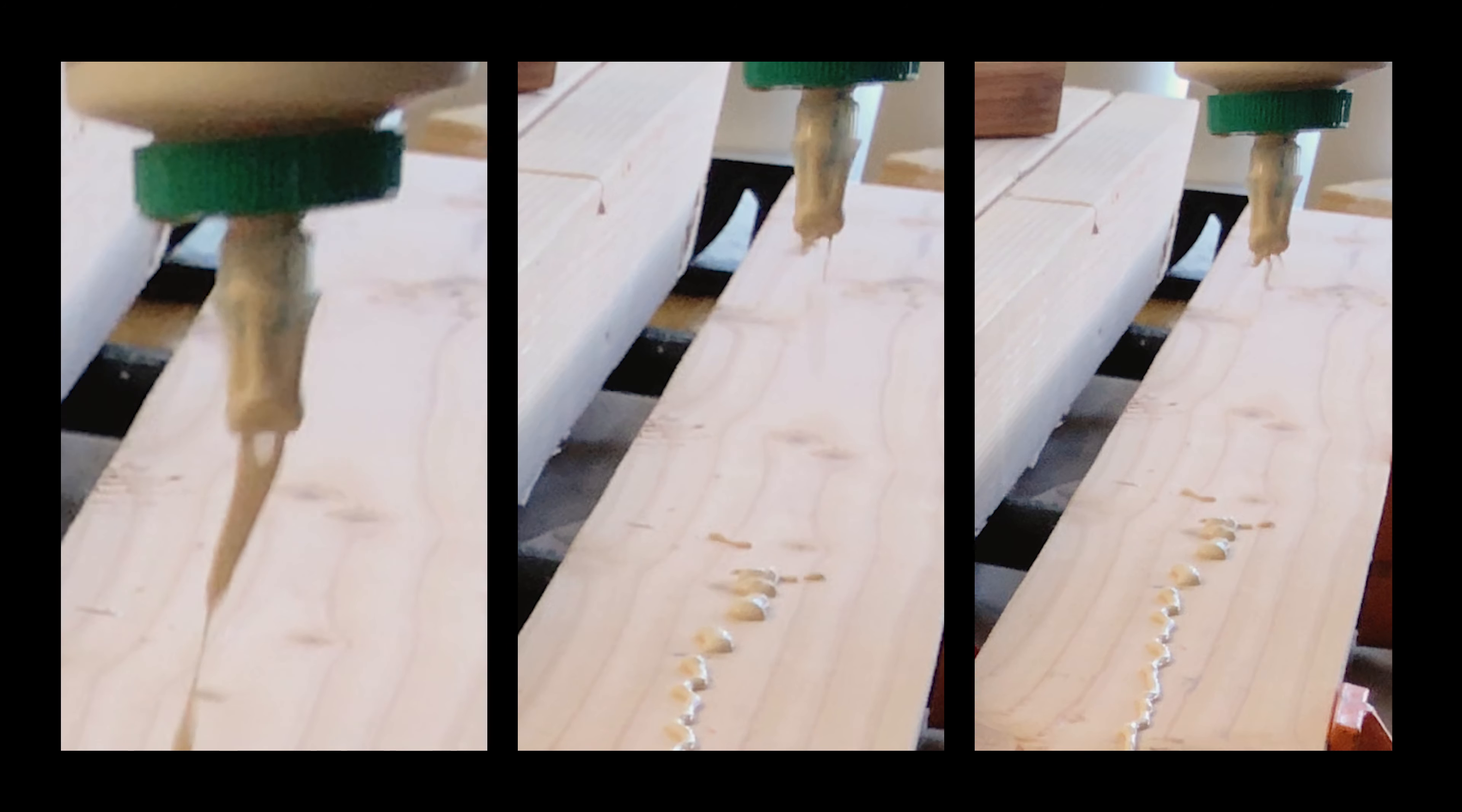Now to prep for the glue-up, I run the orbital sander over the faces of the boards. I know this is a far cry from true flattening, so I'm just trying to knock down the peaks and rough patches, figuring with enough glue and clamping, the gaps will get filled in no problem.